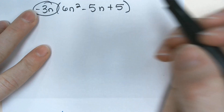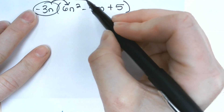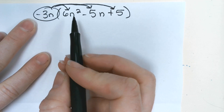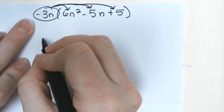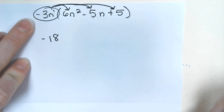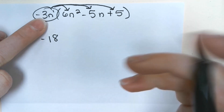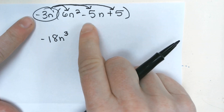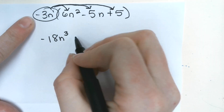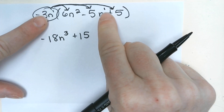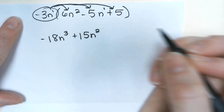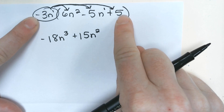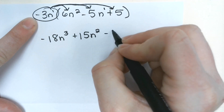On the warmup, we are going to distribute the negative 3n to everything on the inside. You multiply coefficients and then add your exponents. Negative 3 times 6 is negative 18, and this would be n to the first. When you multiply n to the first and n to the second, you get n to the third. Then negative 3n times negative 5n is positive 15n squared. And the last thing would be negative 3n times 5, which would be negative 15n.